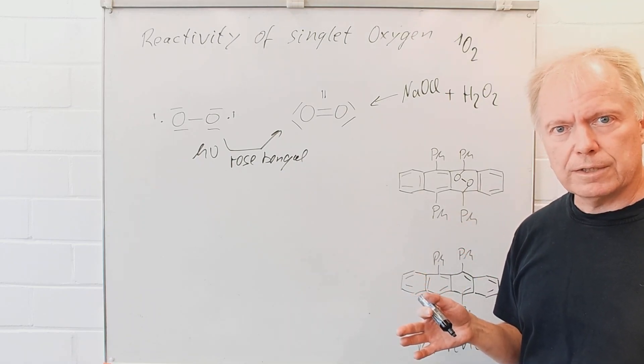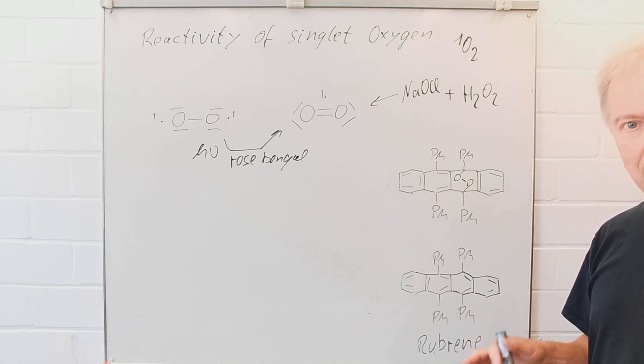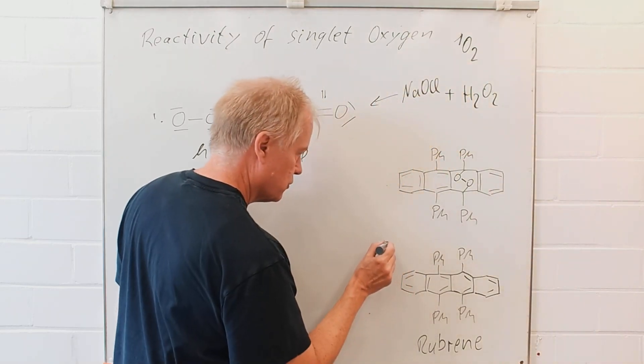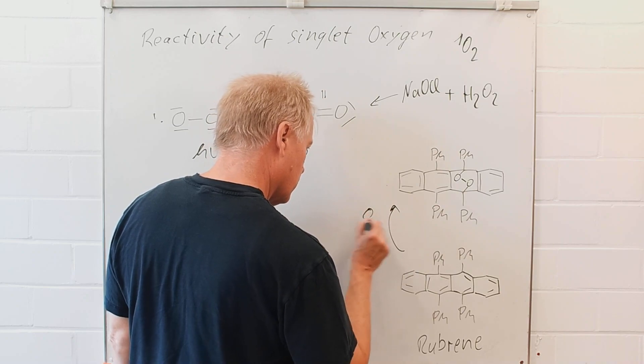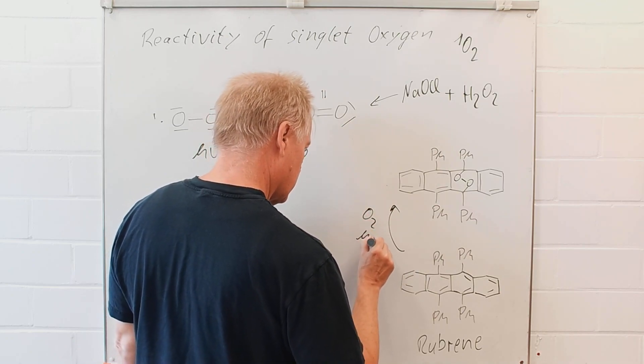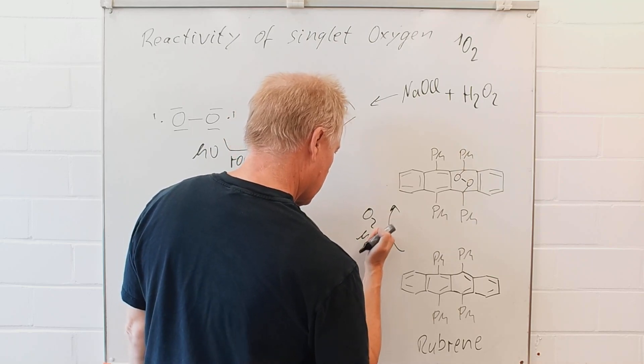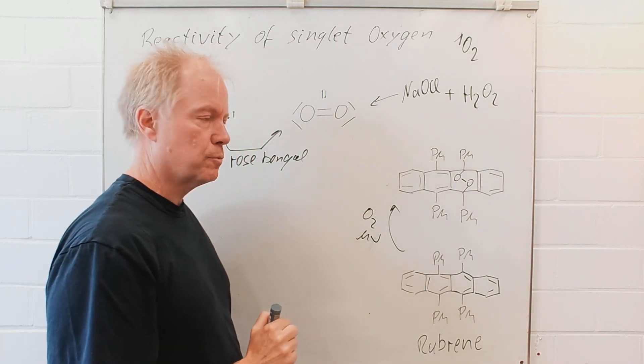introduce light, for instance sunlight and air. After a while, the solution will lose its color. So, with oxygen photochemically, this molecule is produced.